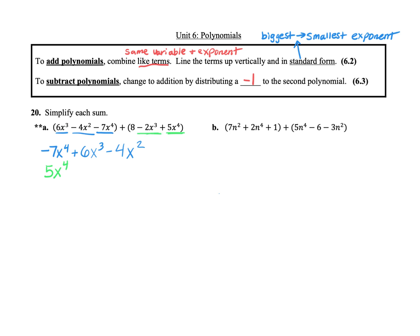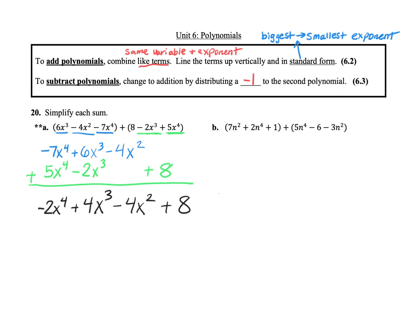Then we have the negative 2x to the third — that's going to go right here. And then that 8 does not go with the 4x squared. 8 is a constant, so 8 is actually just going to be its own column. The constants always come last, so I'm going to put the 8 right there. And now we're ready to add them together. Since our terms are lined up, we can just add them vertically. Negative 7 plus 5 is negative 2, so I have negative 2x to the fourth. 6 plus negative 2 is 4, so now we have 4x cubed. The minus 4x squared does not have any other x squared to go with it, so it's going to stay the same — minus 4x squared. And then we have the plus 8 on the end. So this is our final answer.